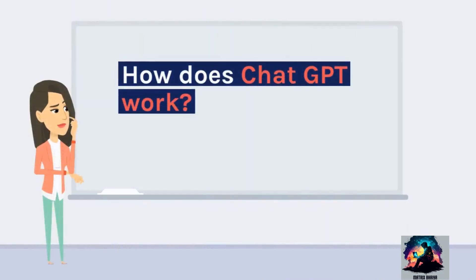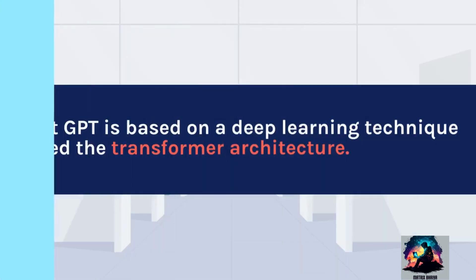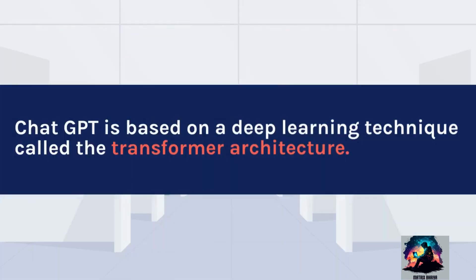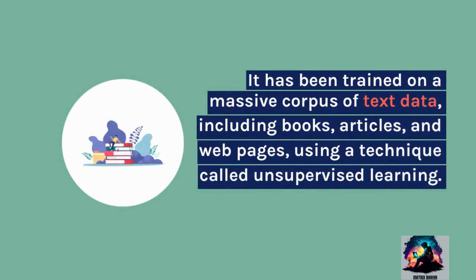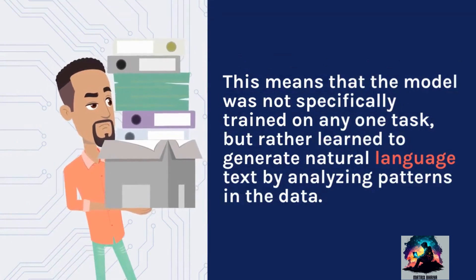How does ChatGPT work? ChatGPT is based on a deep learning technique called the Transformer Architecture. It has been trained on a massive corpus of text data, including books, articles, and web pages, using a technique called unsupervised learning. This means that the model was not specifically trained on any one task, but rather learned to generate natural language text by analyzing patterns in the data.